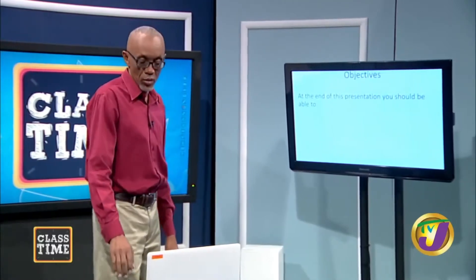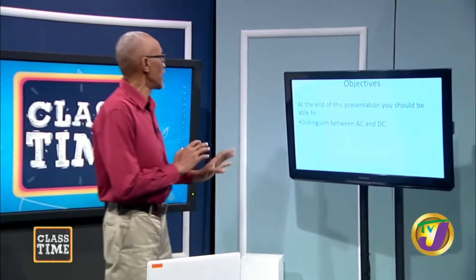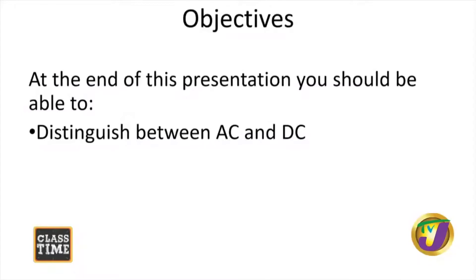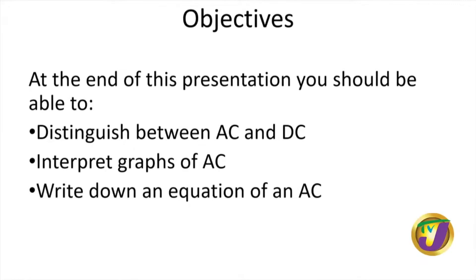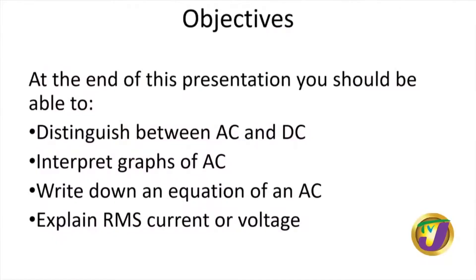At the end of this presentation, you should be able to do the following: distinguish between AC (alternating current) and DC (direct current); interpret graphs of alternating currents, since we can represent them graphically; write down an equation for an alternating current, since we can represent it in equation form; and explain what is called RMS current or voltage — root mean square current or voltage — which is a new term we will spend time on.